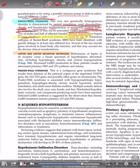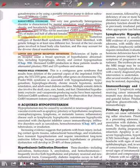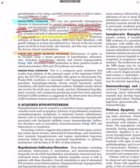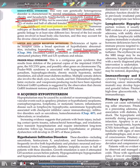Deficiencies of leptin or the leptin receptor can cause a broad spectrum of hypothalamic abnormalities. Leptin is associated with hunger signaling, so leptin/leptin receptor deficiency causes hyperphagia, obesity, and central hypogonadism, with decreased GnRH production resulting in low LH and FSH.